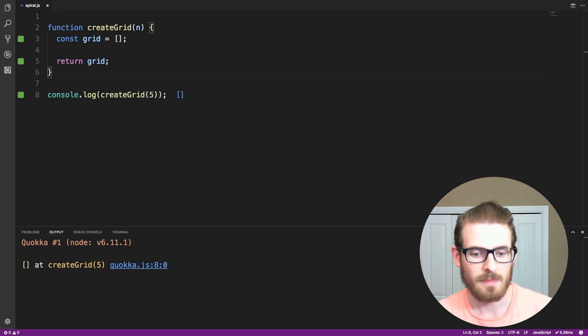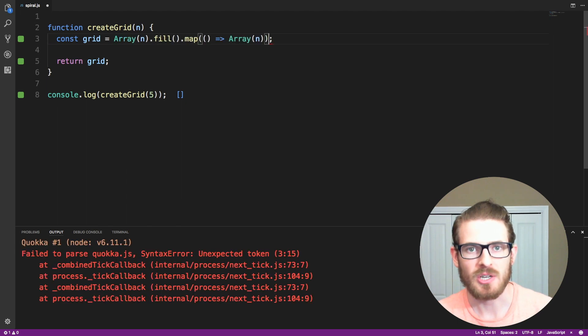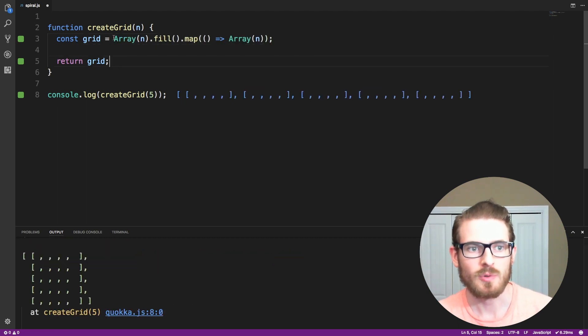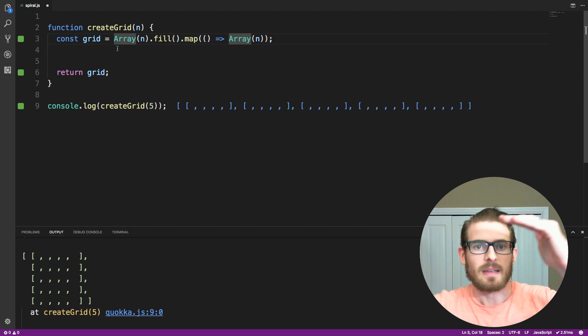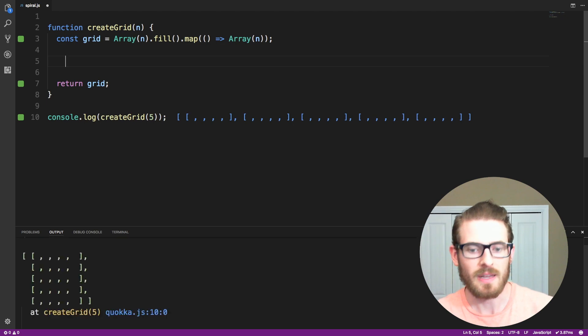So the first step is we need to create a n by n blank grid or array, which I found this little implementation on Stack Overflow, which can be used for building up a n by n grid. And all this is doing is creating a grid that's n, and then for each element inside there, putting another array, which is length of n.